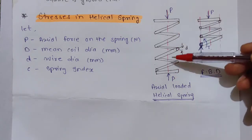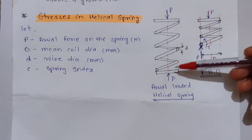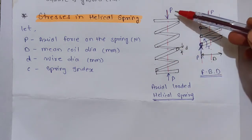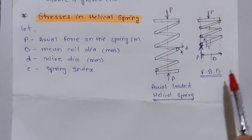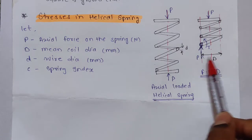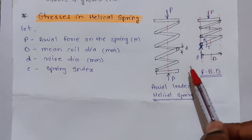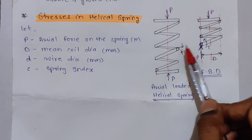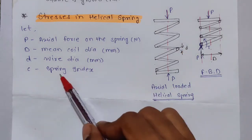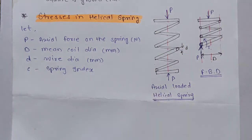Here we have one axially loaded helical compression spring. P is the axial force on the spring, D is the mean coil diameter, small d is the wire diameter, and we know the spring index — it is nothing but D divided by d.